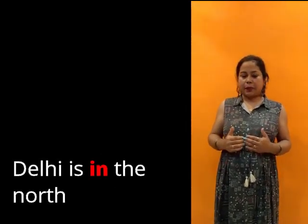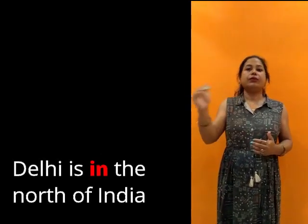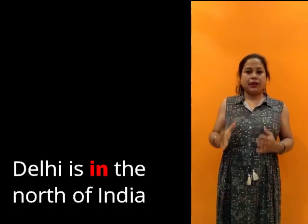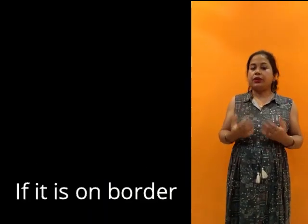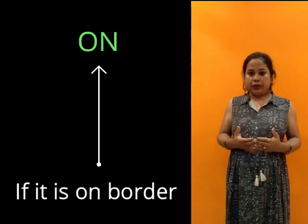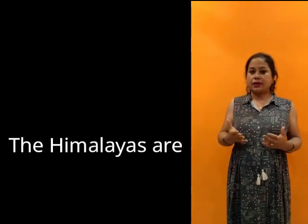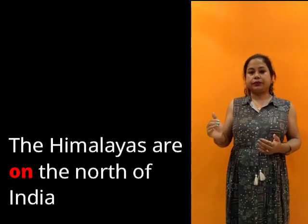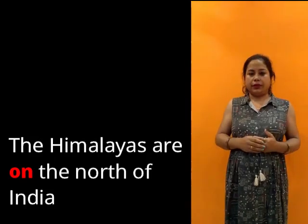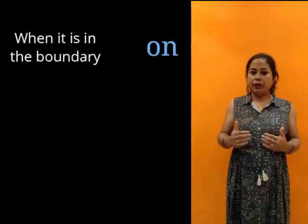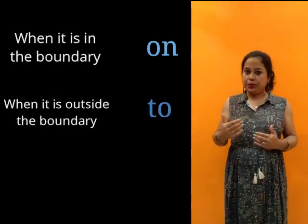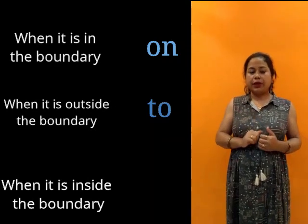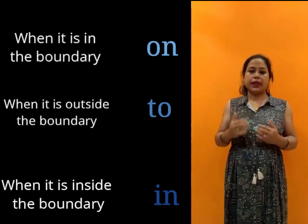Suppose: Delhi is in the north of India, because Delhi is inside the boundary of India, so we use 'in'. If it is on the border, then we use the preposition 'on'. Suppose the Himalayas are on the north of India. When it is on the boundary, we use 'on'. If it is outside the boundary, we use 'to', and if it is inside the boundary, we use 'in'.